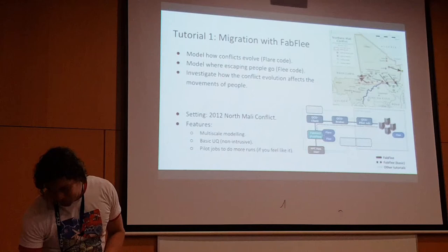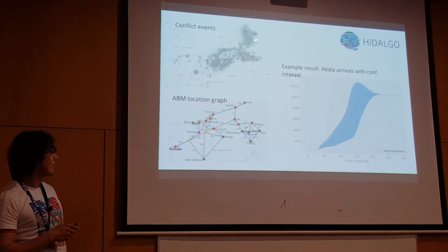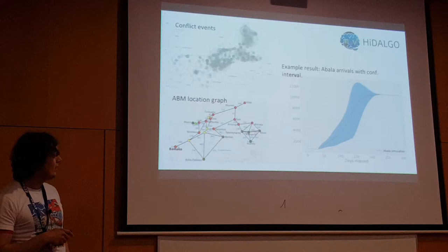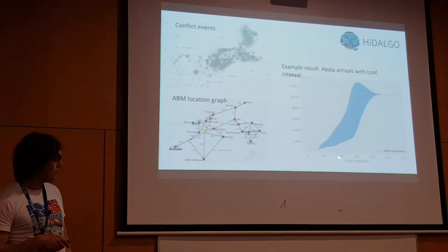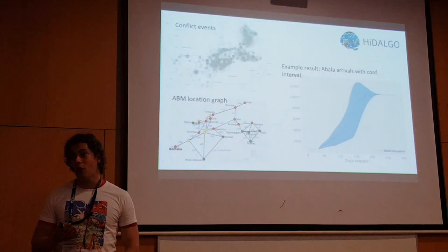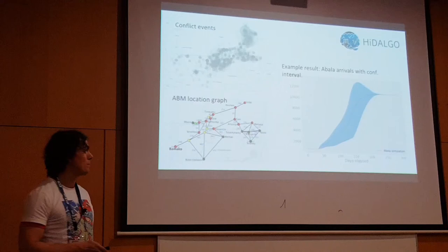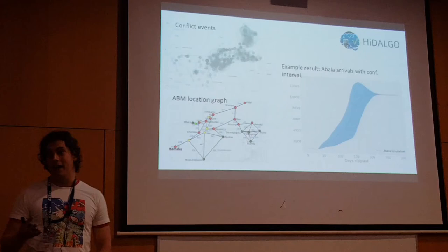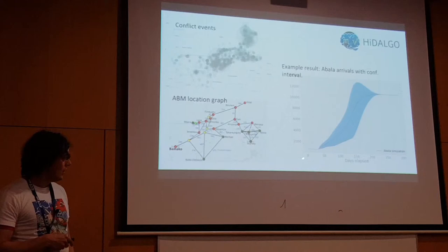Here you can see an overview of conflicts occurring in Mali, the location graph used for the agent-based simulation, and then as a result you get arrivals of migrants in a camp — for example in Abala in Niger. The blue area is a 95% confidence interval based on 10 runs. It's quite simple, but kept that way for runtime reasons. You can see how conflict evolution roughly affects arrivals. In the tutorial you can run it for 50 days, but if you want the full run you can do 300 days.